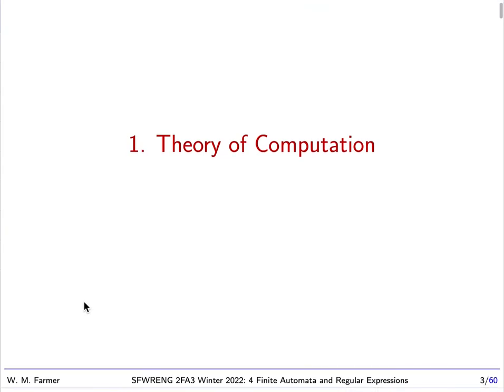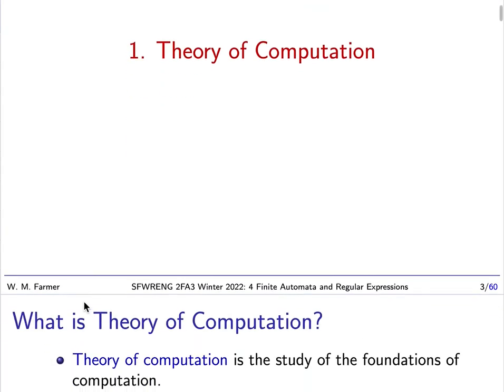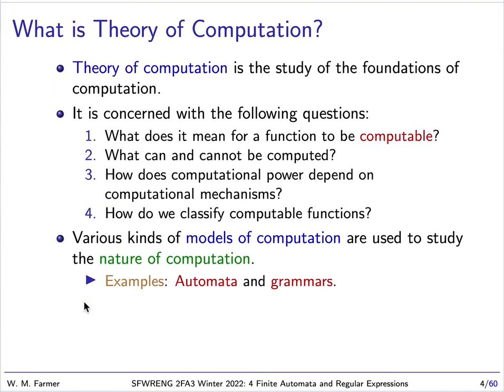The first part of this is Theory of Computation. Theory of Computation is the study of the foundations of computation — basically trying to figure out what computation is, what makes computation computation. It's concerned with the following questions: What does it mean for a function to be computable? What can and cannot be computed? How does computational power depend on computational mechanisms? How do we classify computational functions?